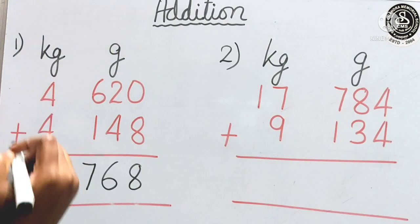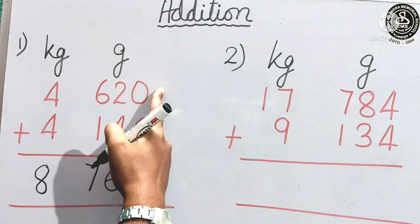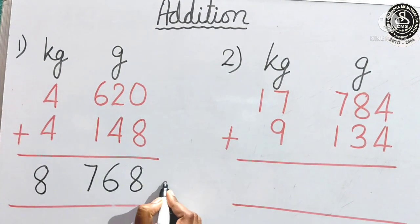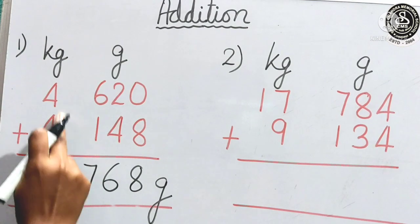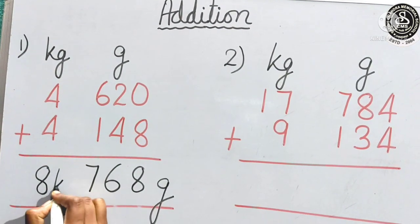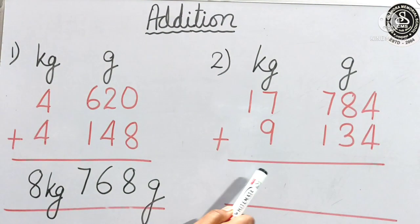And after doing the addition always we will write the unit. That is after adding these two numbers we get this one. So, what is the unit? Gram. We will write here G. Now, let us see number 2.